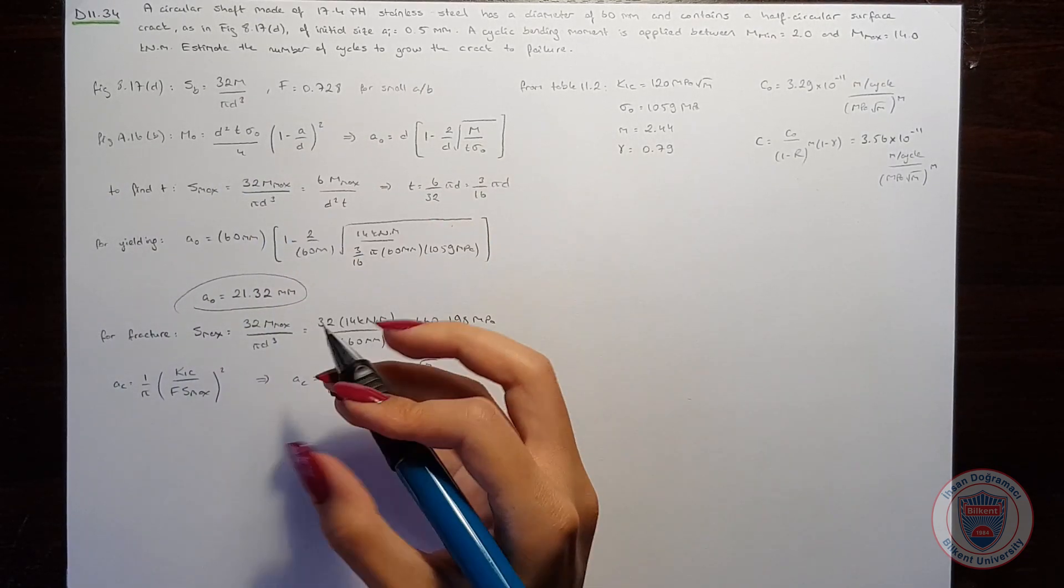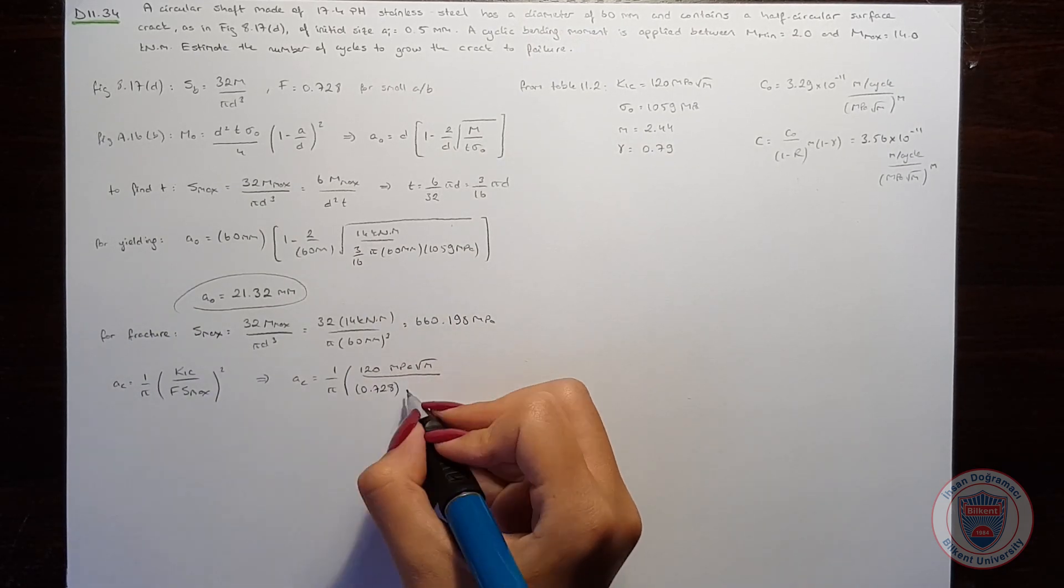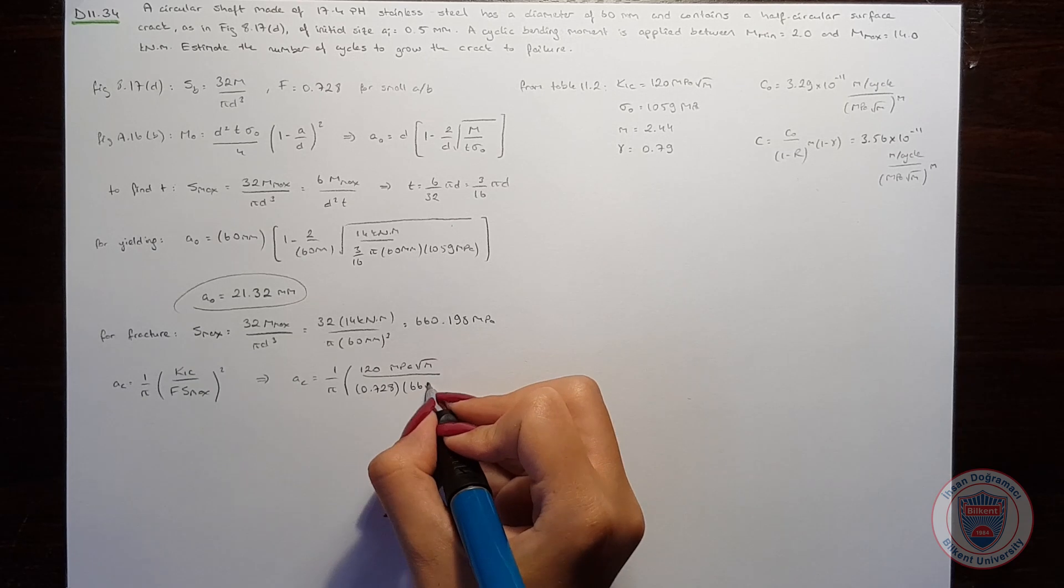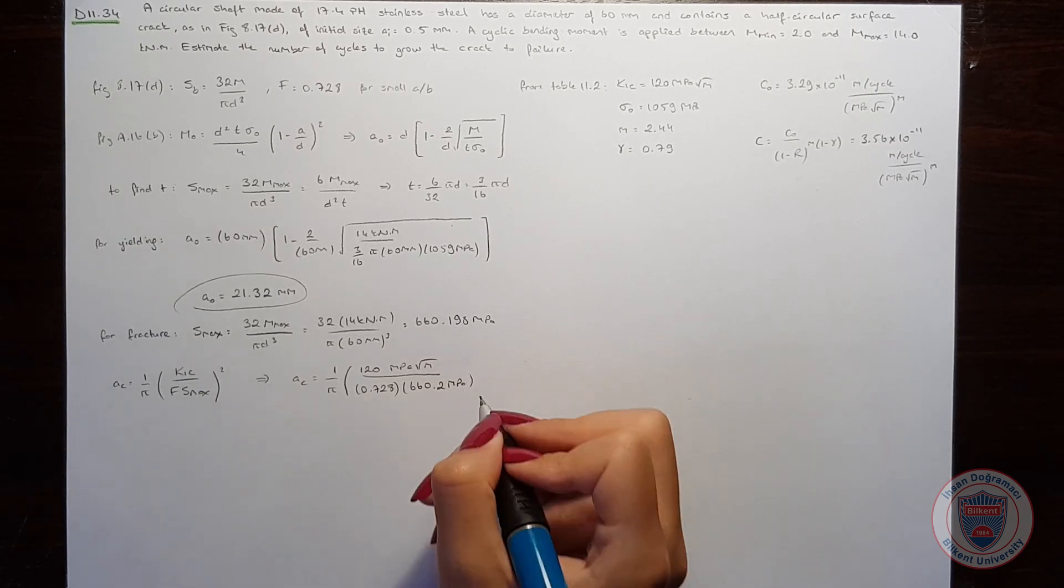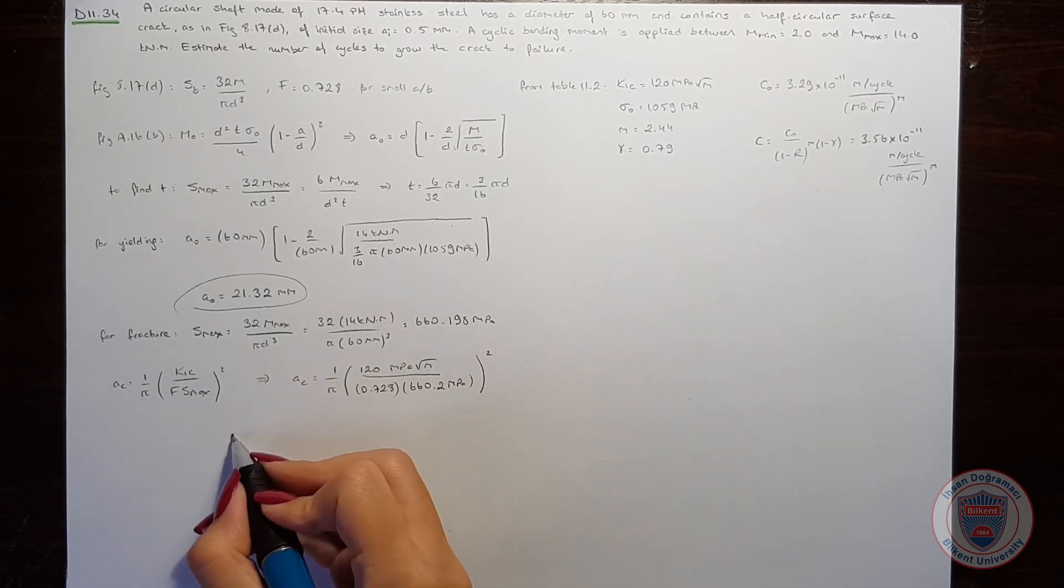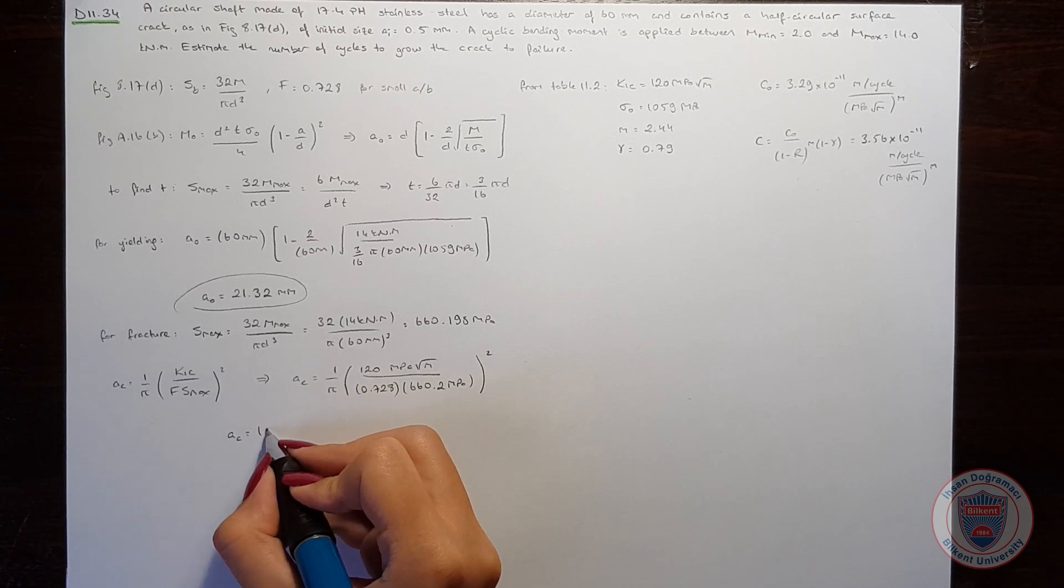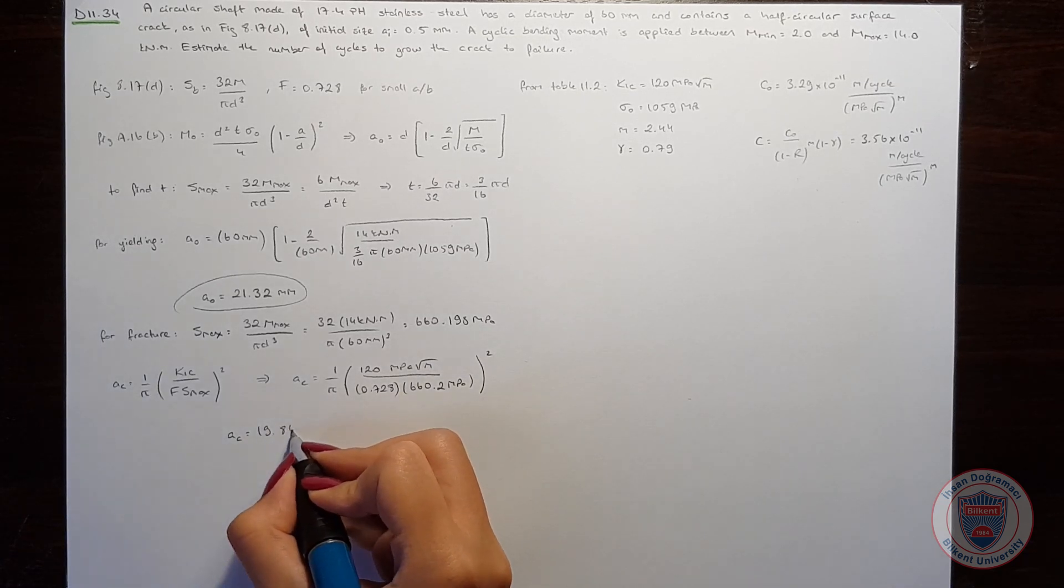So that the critical crack length will be 1 over π times 120 MPa square root of meters over the form factor which is 0.728 times the Smax, squared. And when we compute, we see that the critical crack length is 19.84 mm.